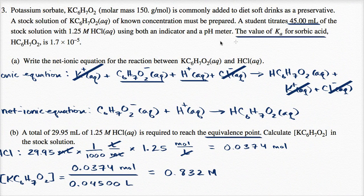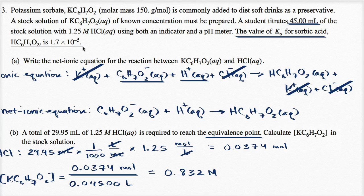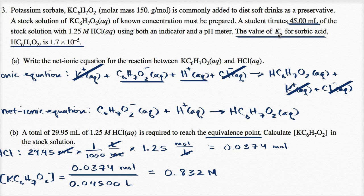Well they gave us the Ka of sorbic acid as being 1.7 times 10 to the negative fifth. So somehow can we connect the Ka of sorbic acid to the pH at the half equivalence point?